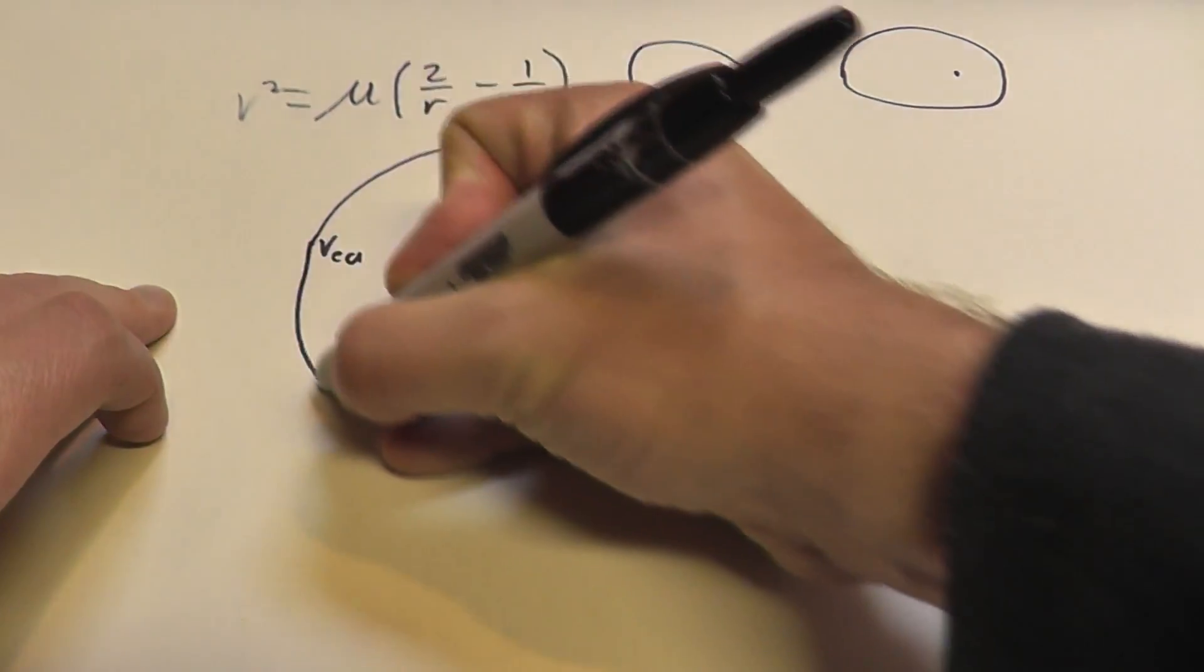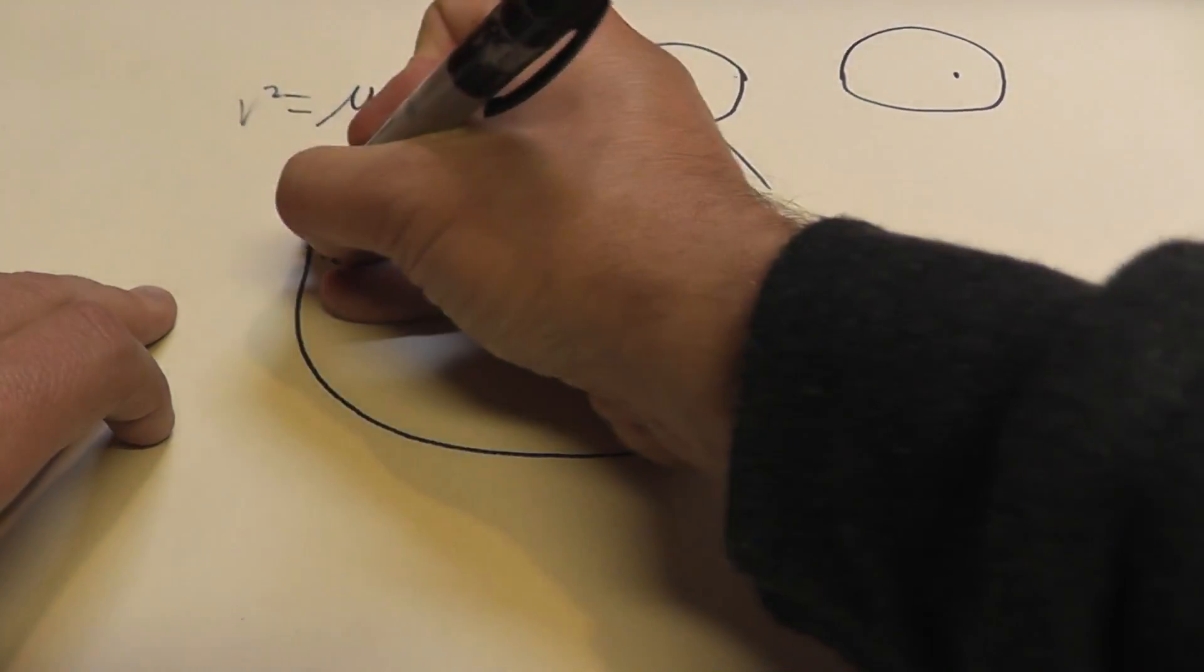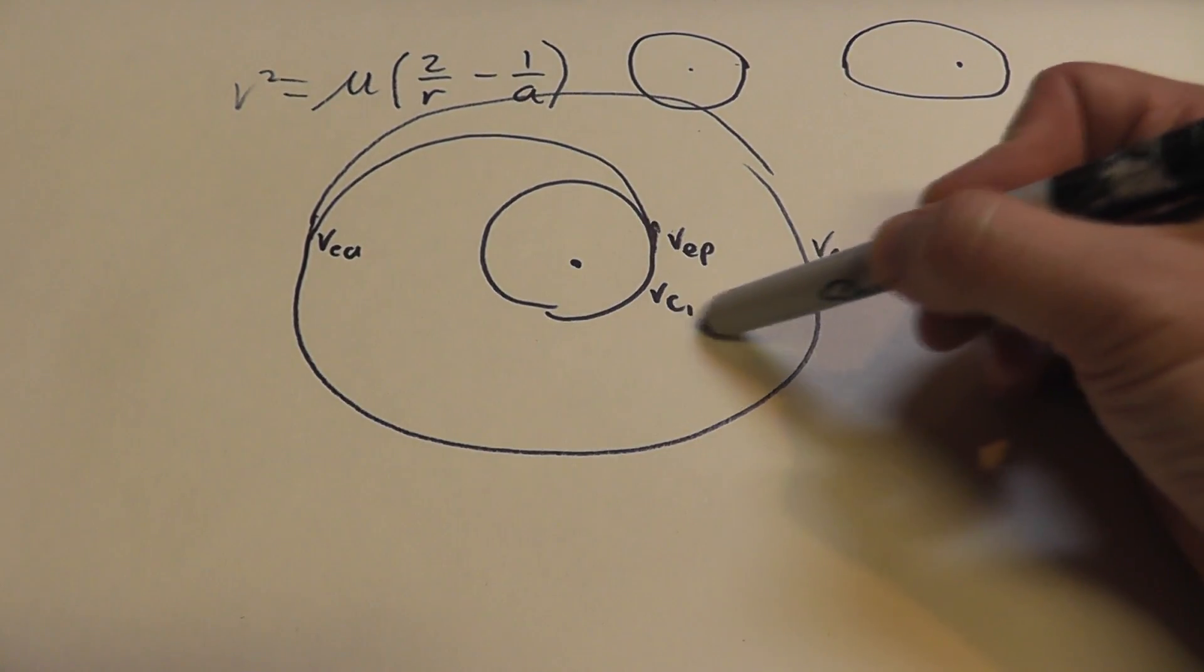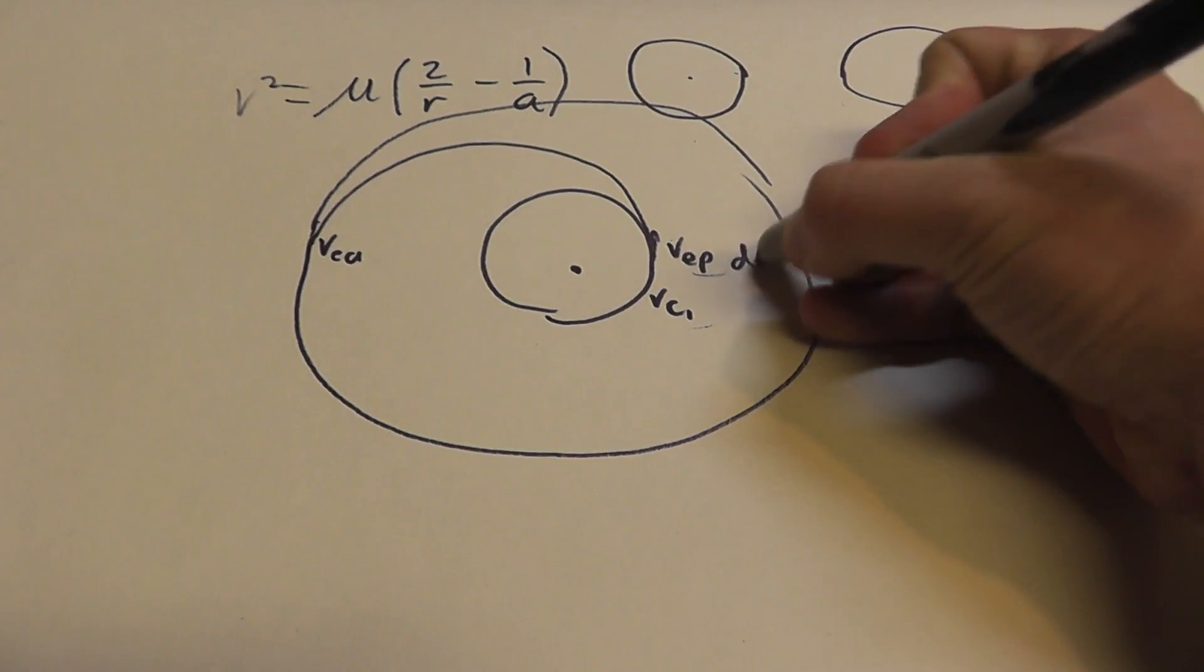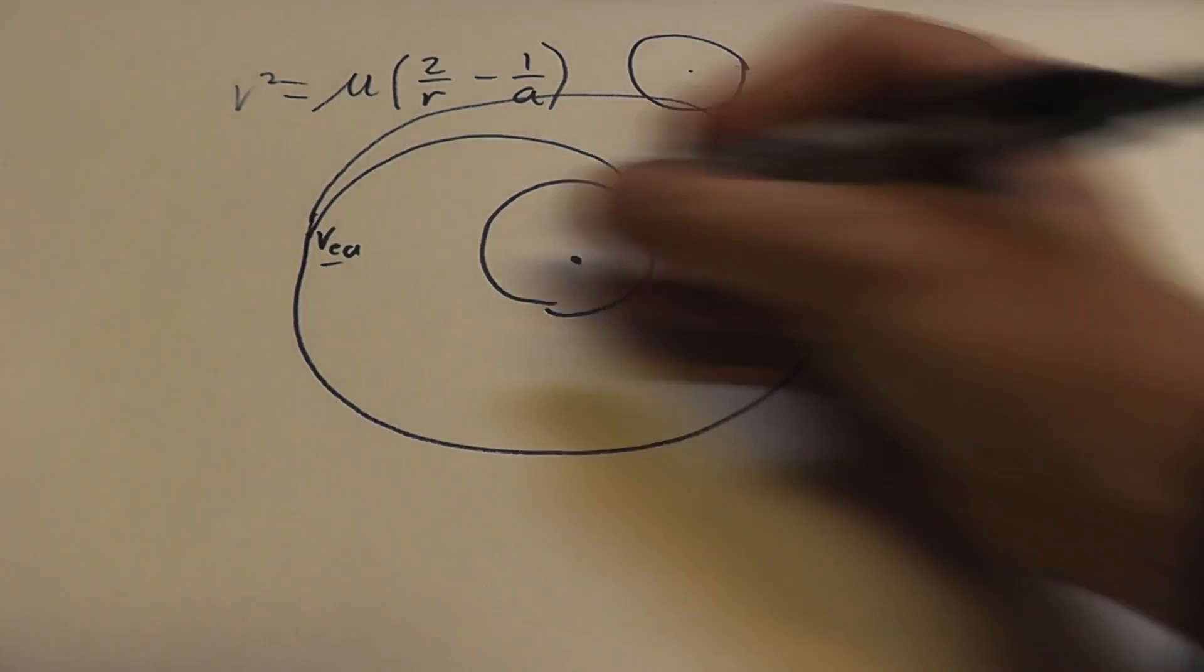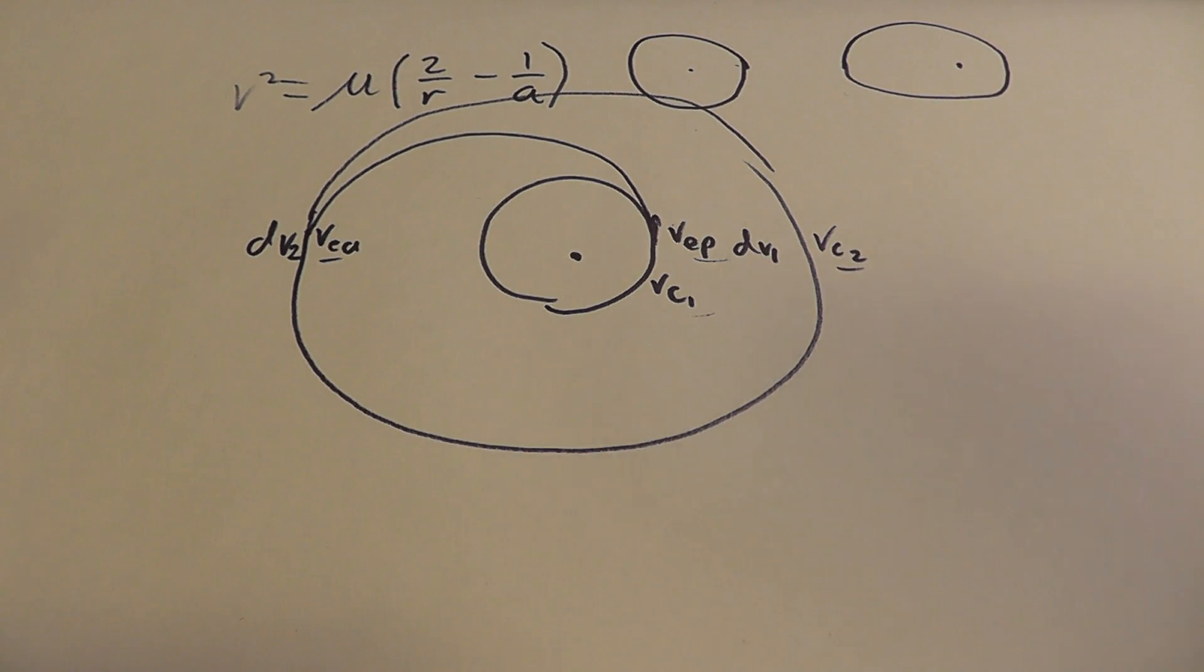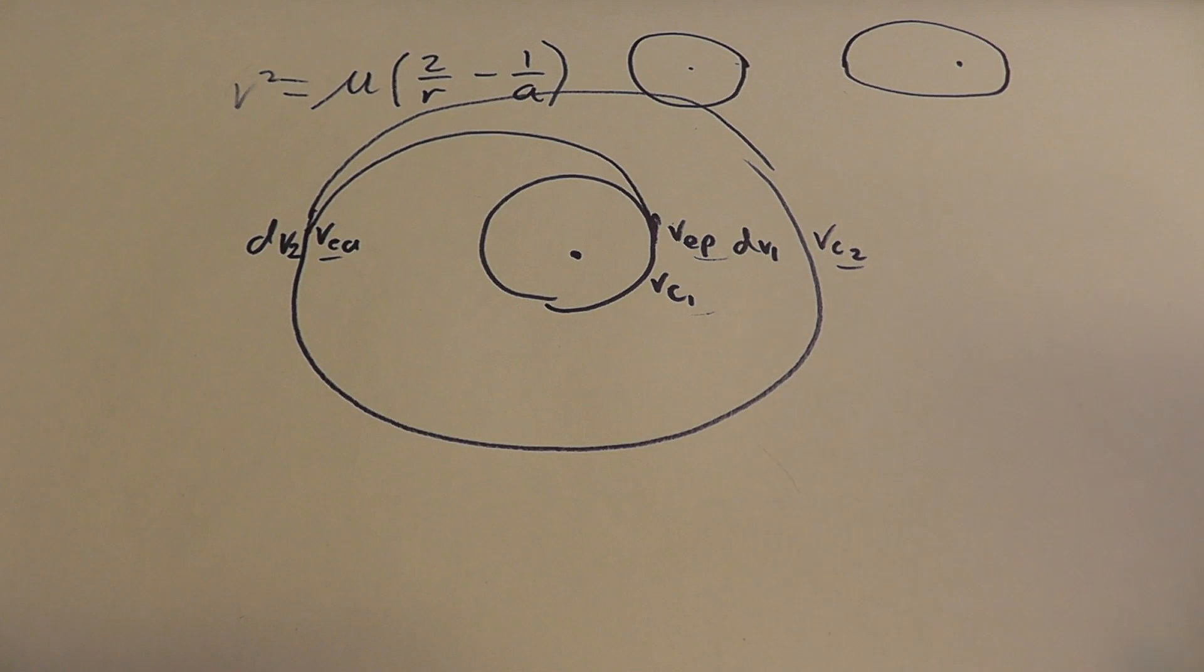And that would give you a delta v1, and here you would go from vea to vc2. And you would have another delta v2. You could add these things together and figure out how much delta v it took to go from orbit 1 to orbit 2, or from orbit 2 to orbit 1, because these things cut both ways.